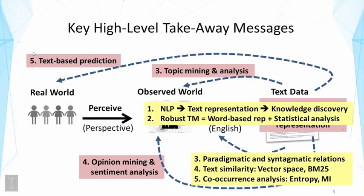We also talked a lot about text similarity when discussing how to discover paradigmatic relations — we compare the context of words to discover words that share similar context. At that point we talked about representing text data with a vector space model and retrieval techniques such as BM25 for measuring similarity of text, and for assigning weights to terms TF-IDF weighting. This part is well connected to text retrieval.